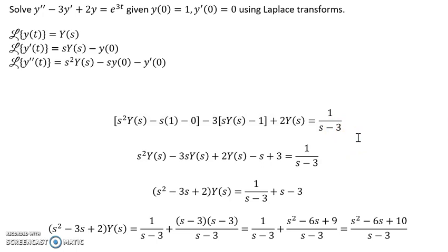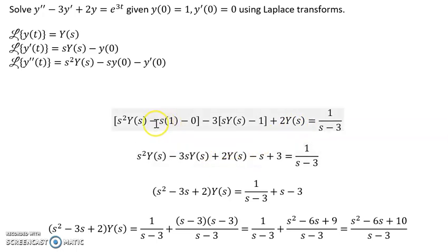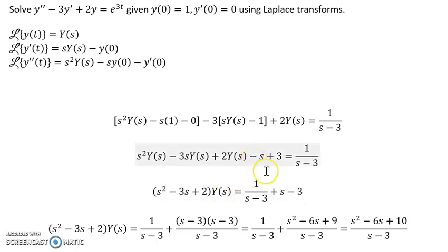Now we just need to do some simplification in order to solve for Y(s). We're going to distribute and collect the Y(s) terms: s² Y(s), minus 3s Y(s), plus 2Y(s). The constant terms give us minus s, and minus 3 times minus 1 gives plus 3, while the right side has not changed. Factoring out Y(s) from these initial terms, I get (s² minus 3s plus 2) times Y(s). I can then move the plus s and minus 3 over to the other side of the equation.